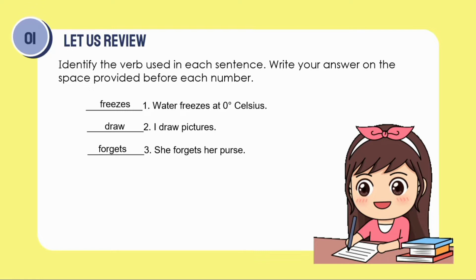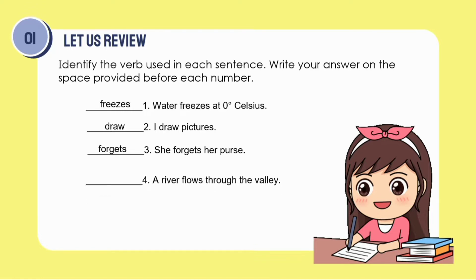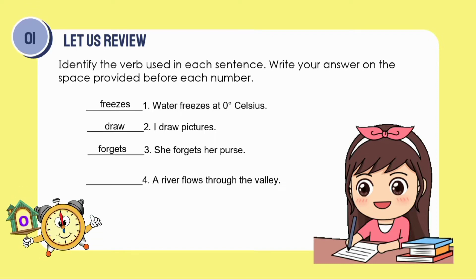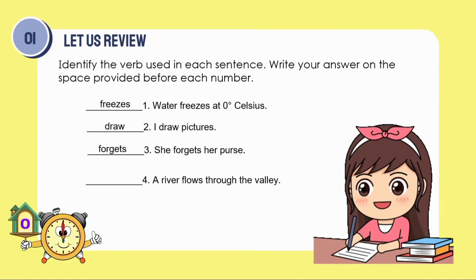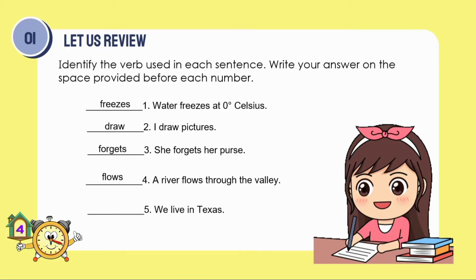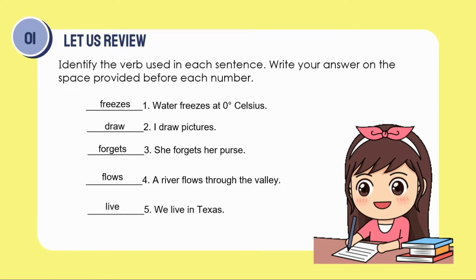How about number 4? A river flows through the valley. The verb is... Flows. Correct! How about number 5? We live in Texas. We have the verb... Live. Very good!